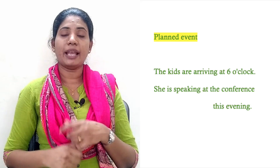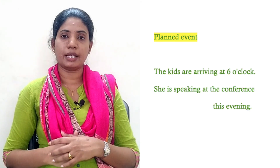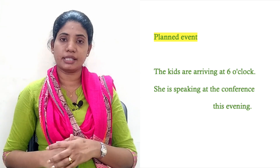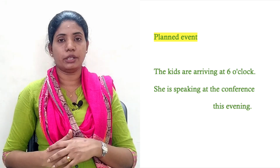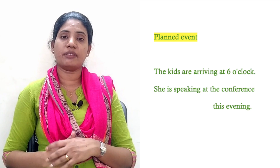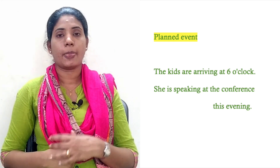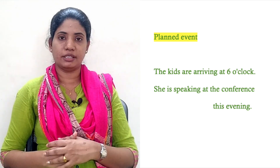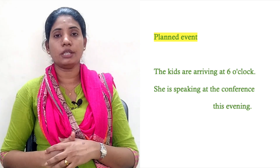We also use Present Continuous Tense for planned events. For example, 'The kids are arriving at 6 o'clock' — this is a planned event. Another example: 'She is speaking at the conference this evening.' These are planned events, and we use Present Continuous Tense for them.